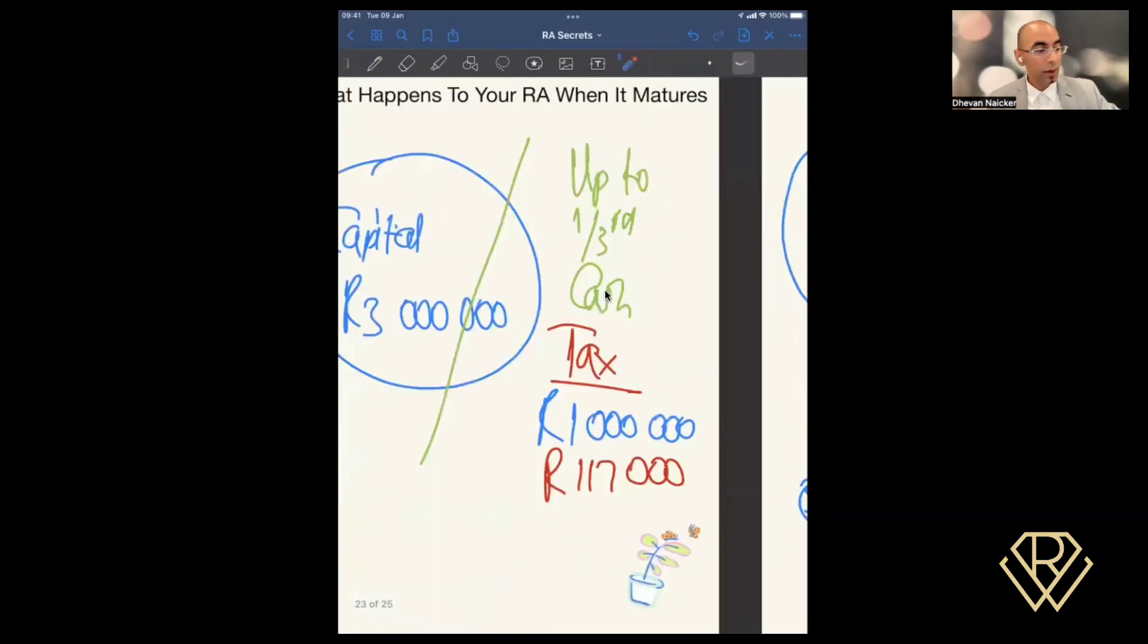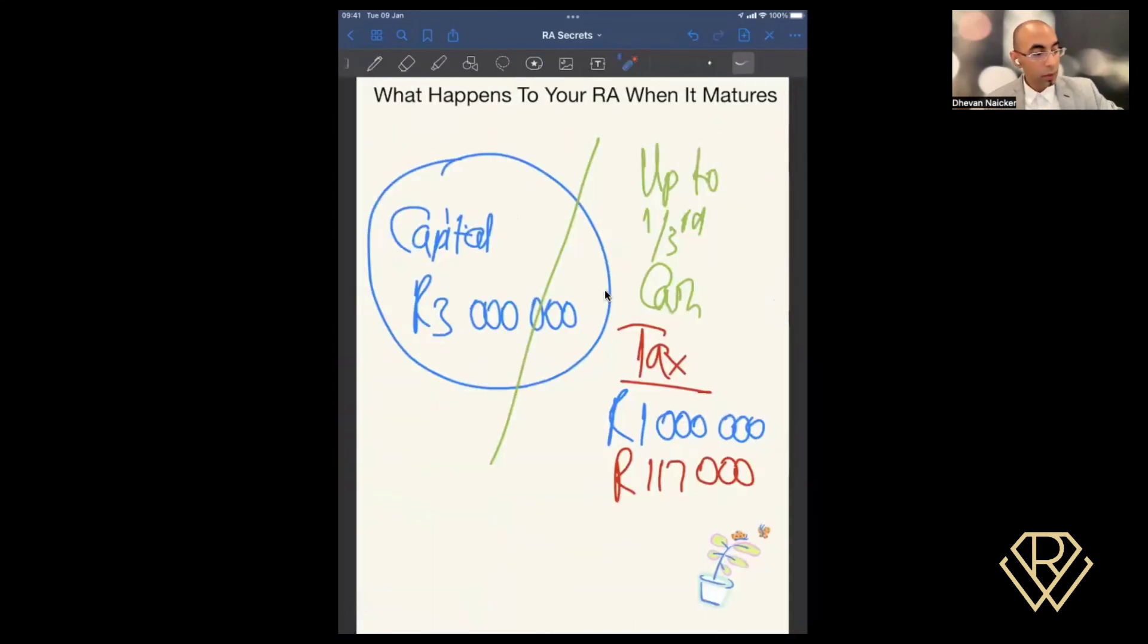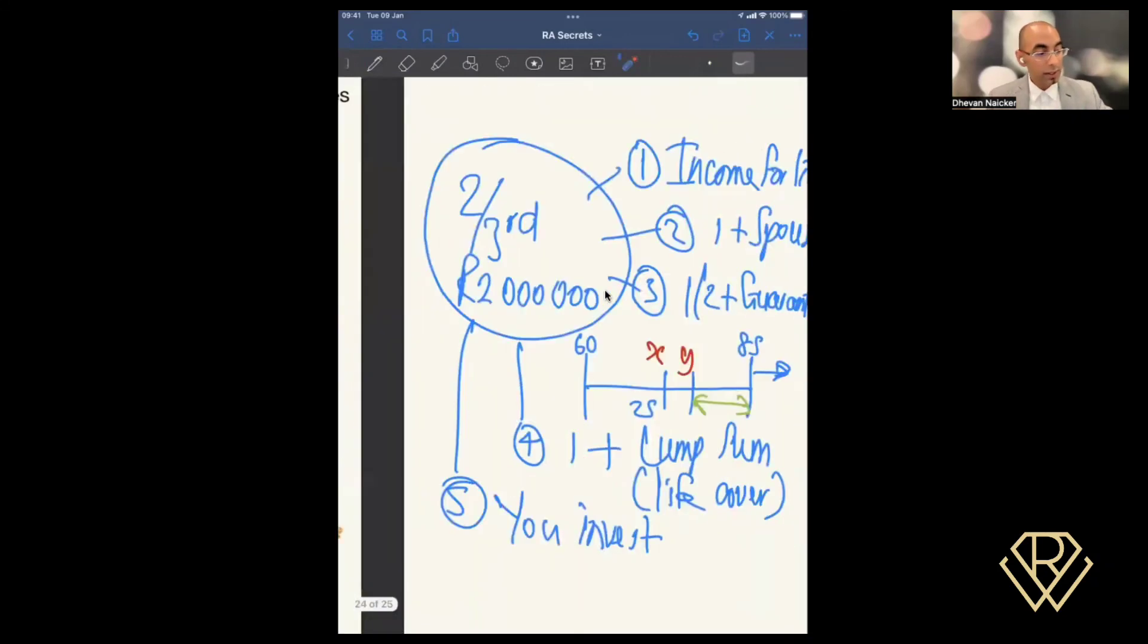So these are your options that are available. Quick recap. We said from your pool of capital, you can take up to one third in cash. You want to be mindful that this amount is subject to tax. Whatever is left behind here would be invested. How is it invested? We looked at five different ways in which that money can be invested. Remember, the income that you are receiving from these five ways would then be taxable. Great. So I hope the video has been helpful for you. I encourage you to watch this video again.